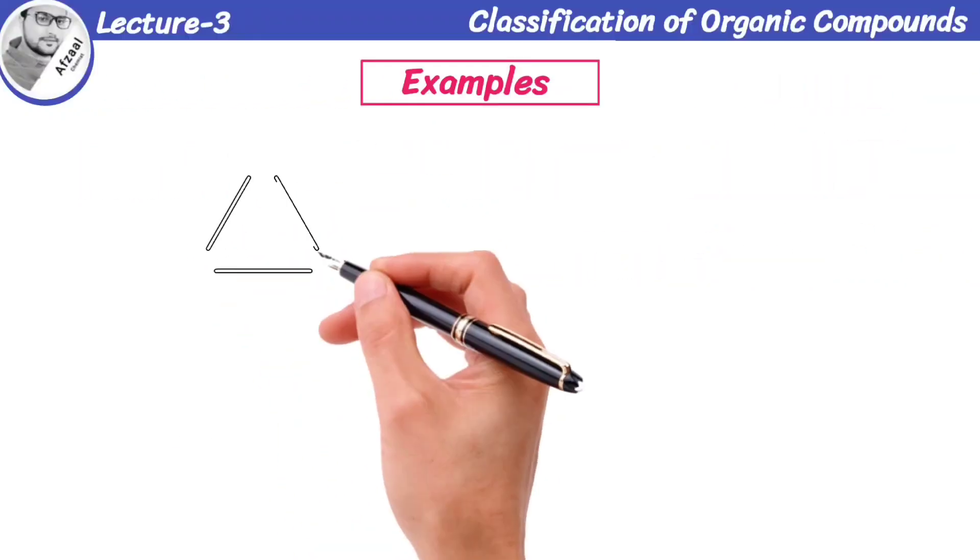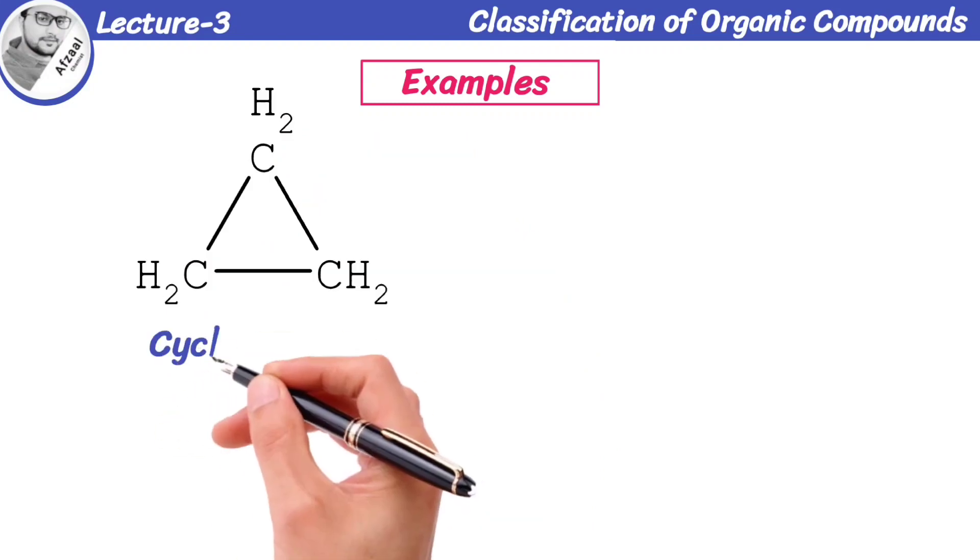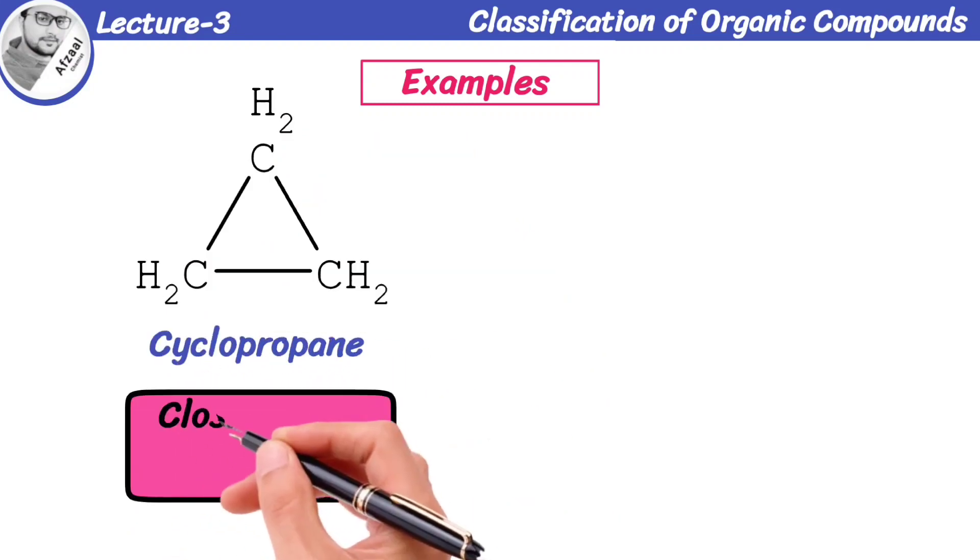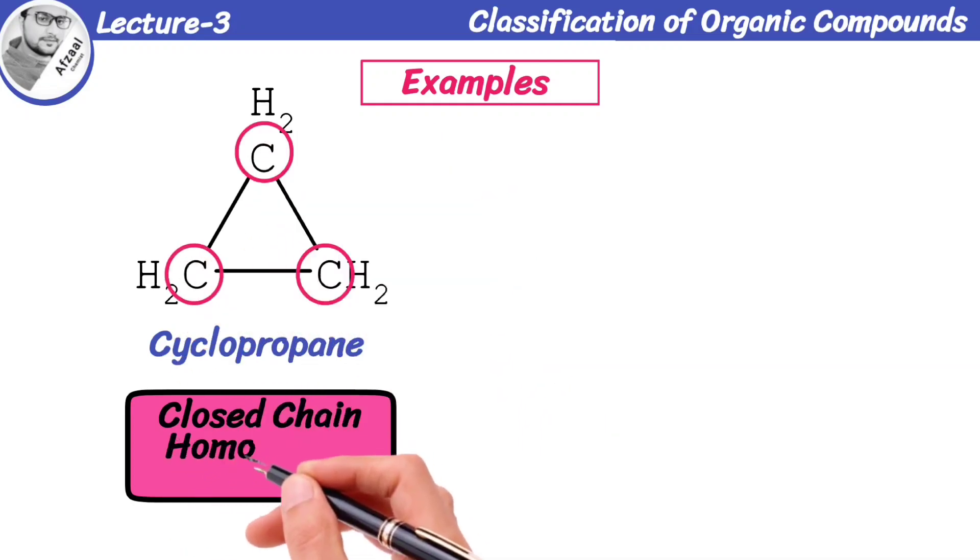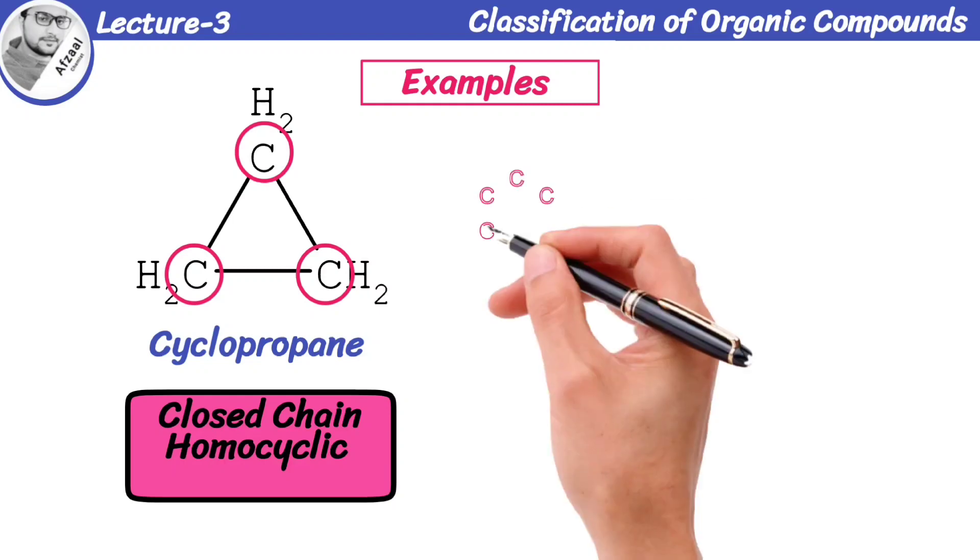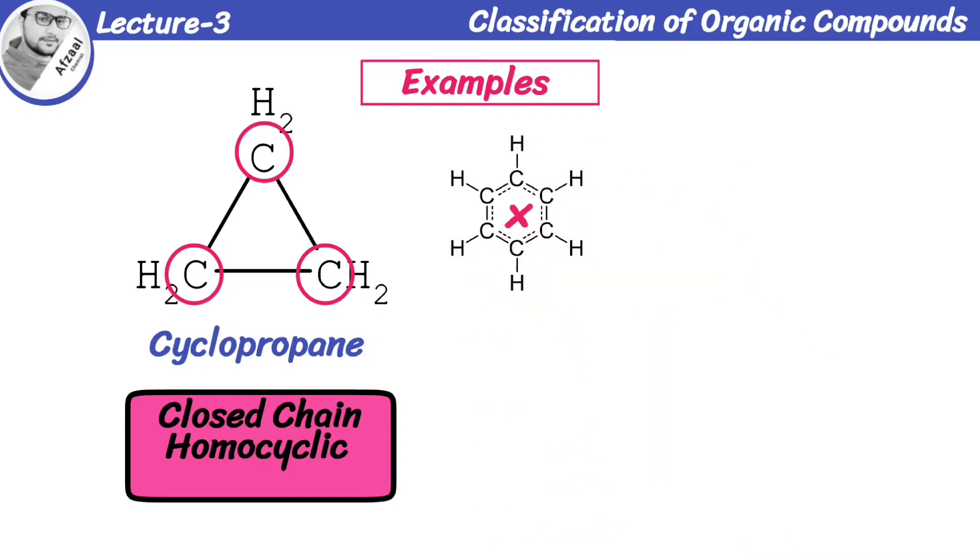Here is another example of cyclopropane. This compound has closed chain structure because carbon ends are not free. All the atoms that form the ring are same, so this compound is homocyclic organic compound. This cyclic structure is not the same as that of benzene ring, so that's why this is a type of alicyclic compound.